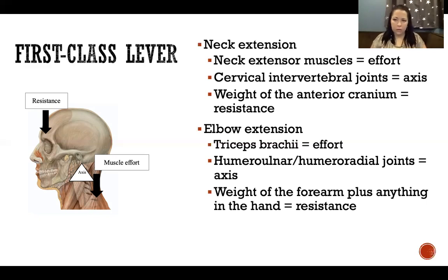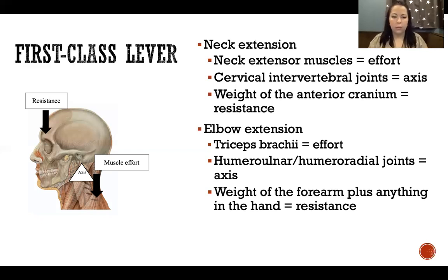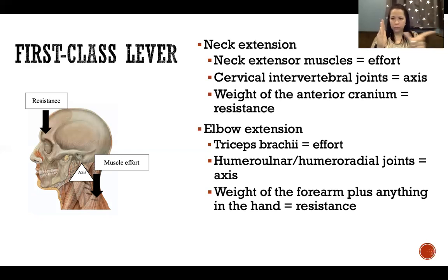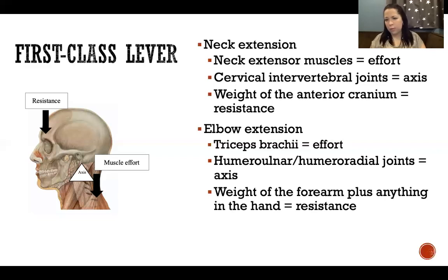For elbow extension, it's the same type of lever — a first class lever where the axis of rotation is the elbow, the humeral-ulnar and humeral-radial joints. The triceps produces the muscle effort, inserting on the olecranon process, which is posterior to the joint. So we have the insertion of triceps brachii, then the actual hinge joint, and then what it's moving is the forearm on the other side of the joint. The resistance is the weight of the forearm plus whatever we might be holding, and then triceps inserts on the other side of the elbow at the olecranon process.